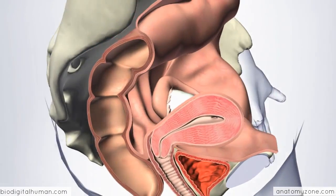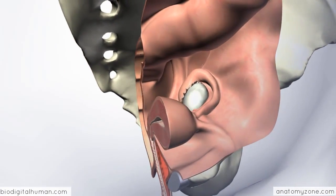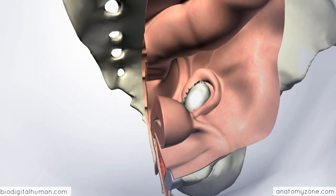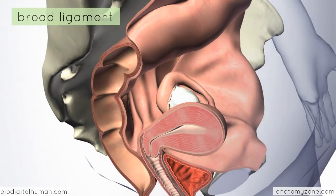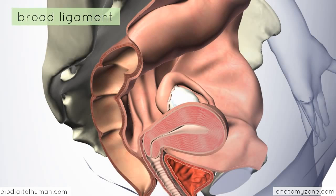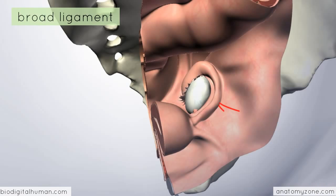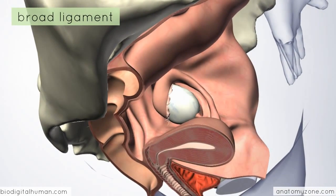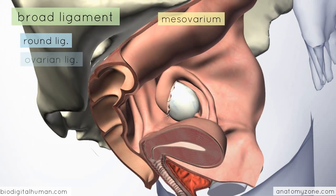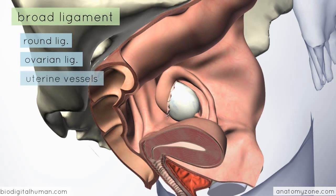Coming back to this model, I'd like to look at the relationship of the broad ligament to the ovaries, fallopian tubes, and the other ligaments formed by its folds. The broad ligament is a flat sheet of peritoneum which drapes over the viscera, attaching from the side of the uterus to the pelvic side walls on either side. Within it, it contains the fallopian tube in its free superior edge, attaches to the ovary via its posterior aspect known as the mesovarium, and contains the round ligament and ovarian ligament. It also transmits uterine vessels, branches of the ovarian vessels, lymphatics, and nerve fibers.